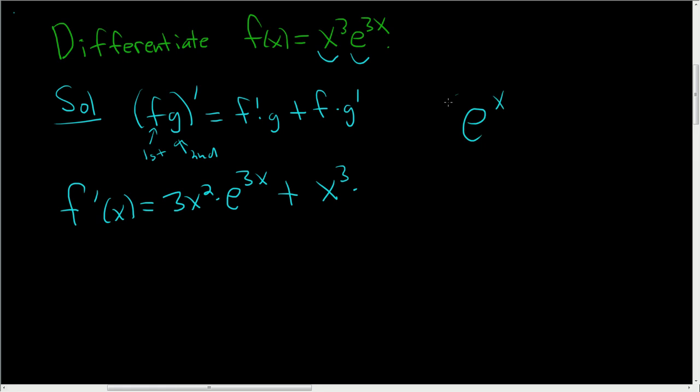Now the derivative of e^x is in fact e^x. So here we just get e^(3x), and then via the chain rule, we take the derivative of the inside. So this here is the inside. The derivative of 3x is 3.